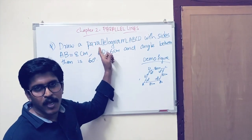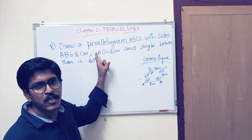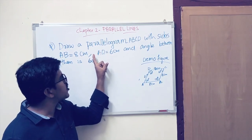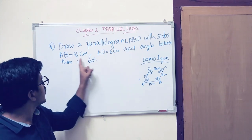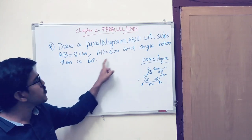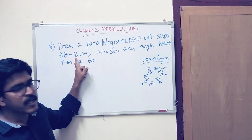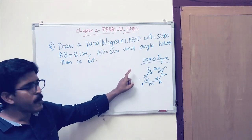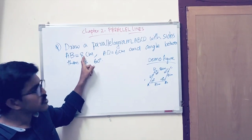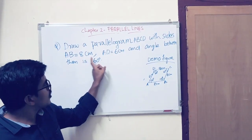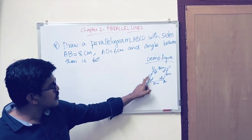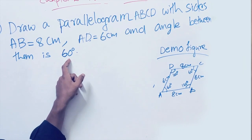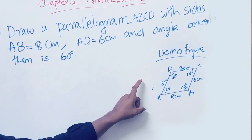Now we are moving on to construct a parallelogram — this is an important question regularly asked in exams. Here is the problem: Draw a parallelogram ABCD with sides AB equal to 8 cm, BC equal to 6 cm, and the angle between them is 60 degree. Most students may think only two measurements are given, but from the features of a parallelogram, opposite sides are equal: if one side is 8 cm, the opposite side is also 8 cm; if one side is 6 cm, the opposite side is also 6 cm. Also, the angle is given as only 60 degree, and the sum of nearby angles of a parallelogram is 180 degree.